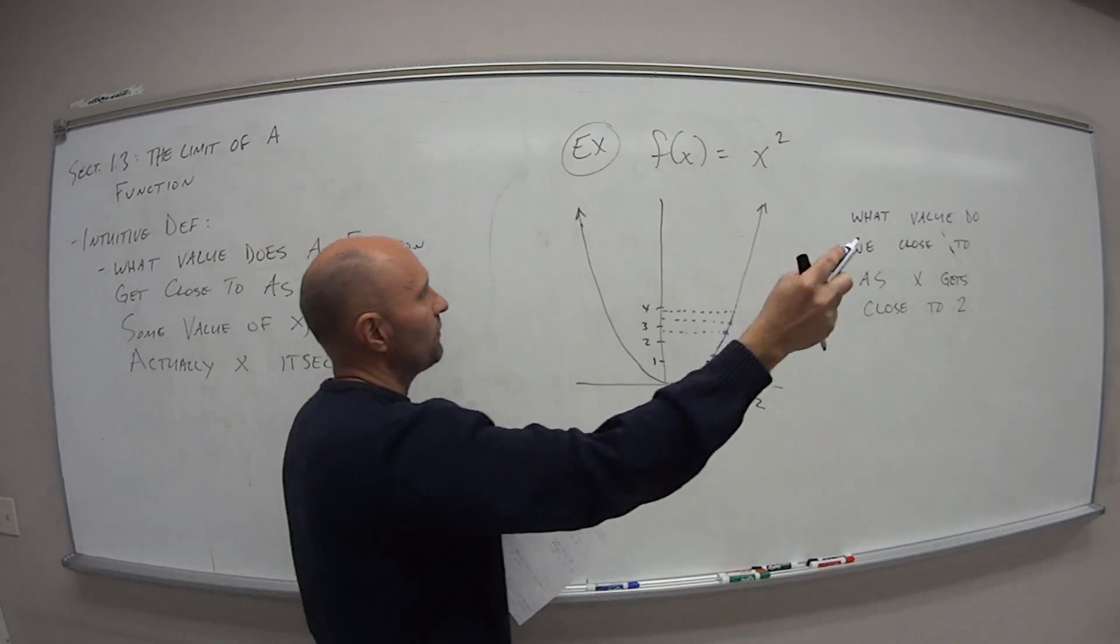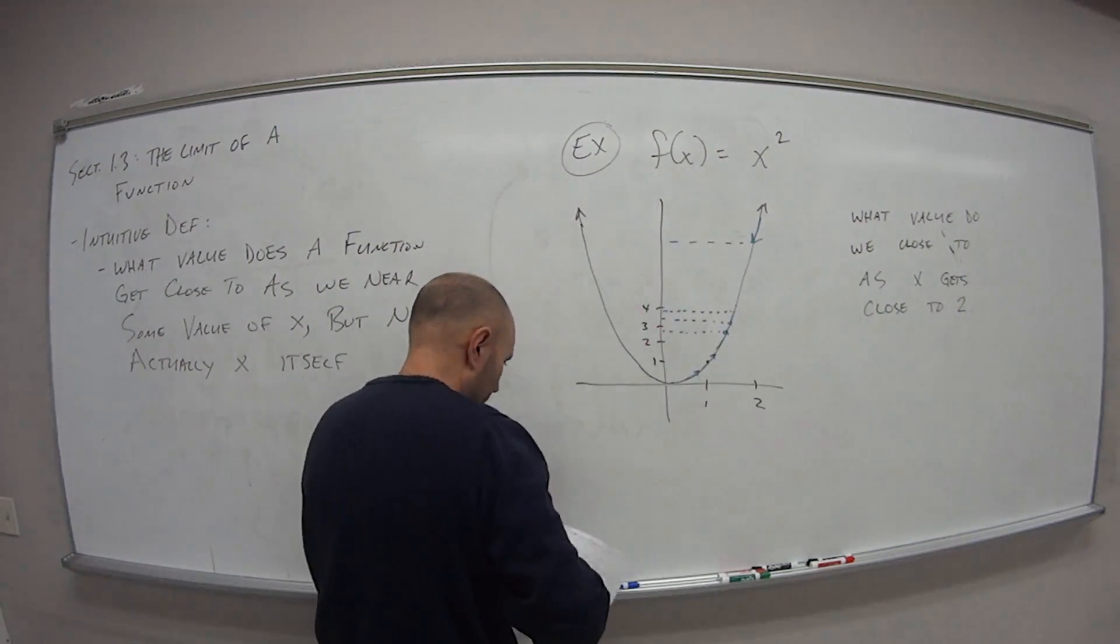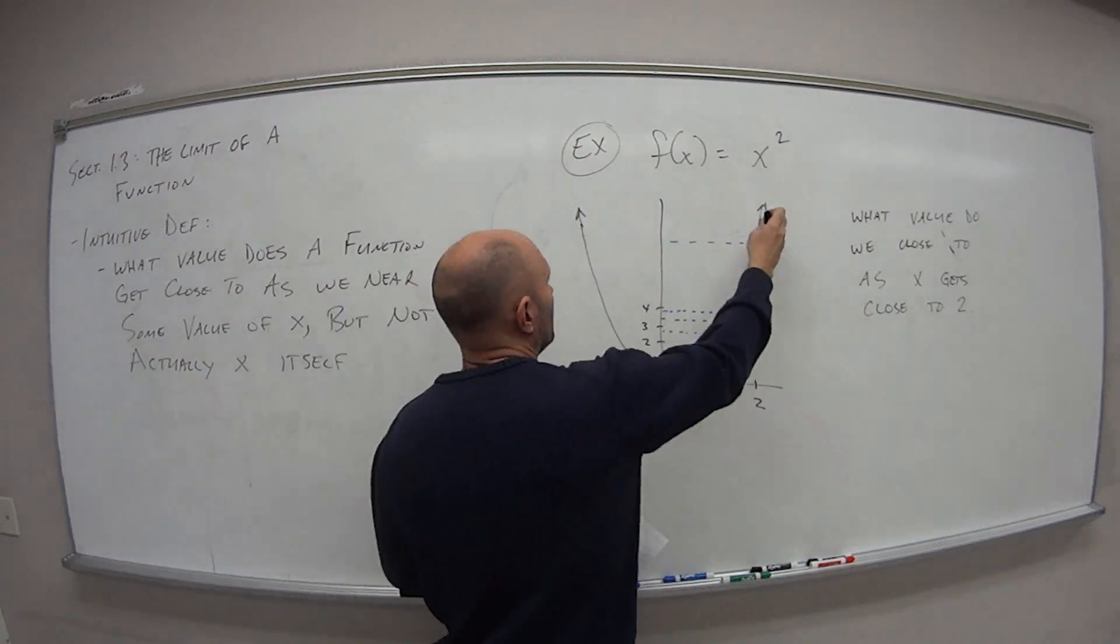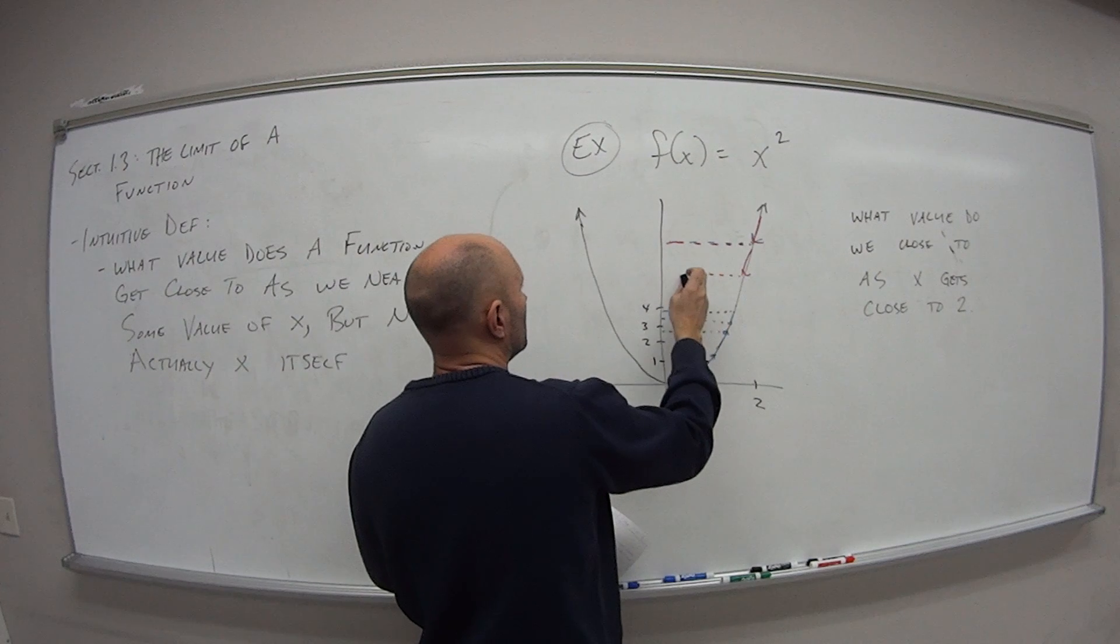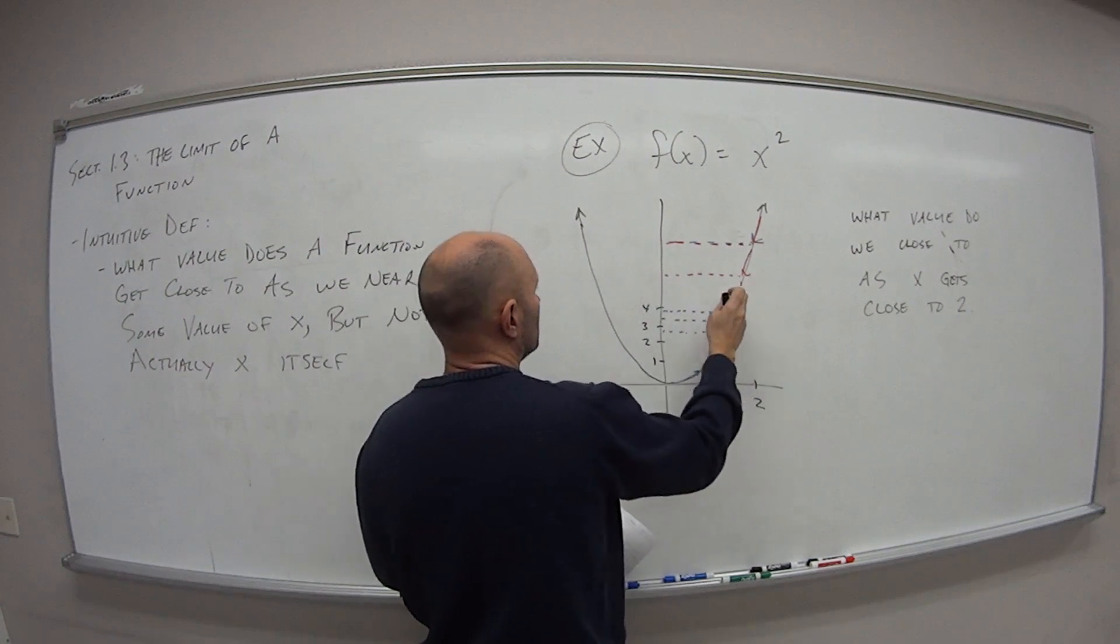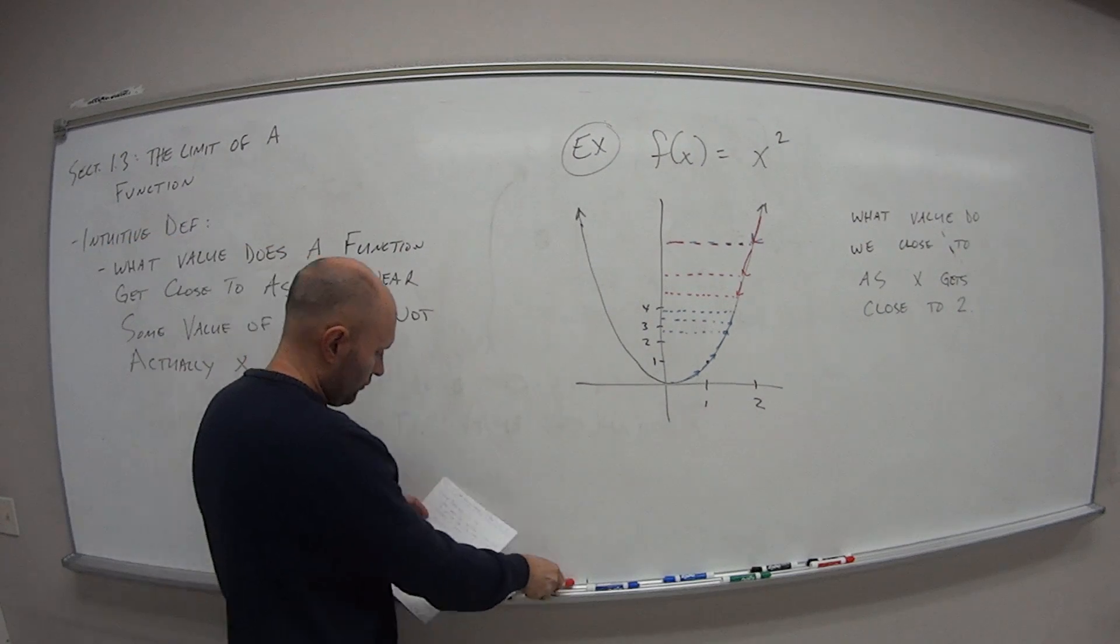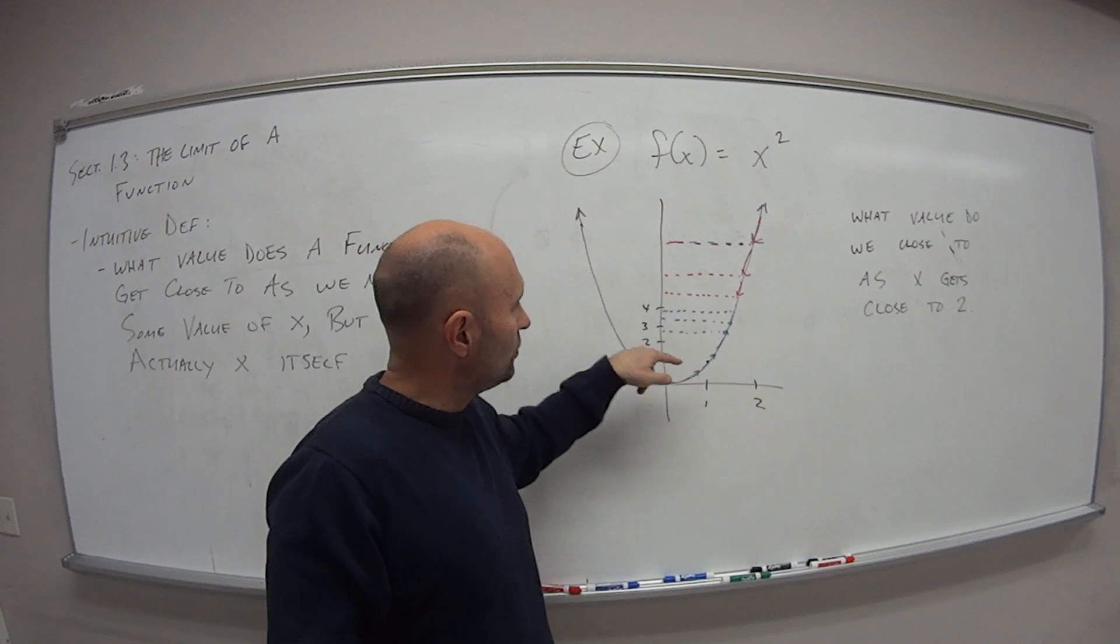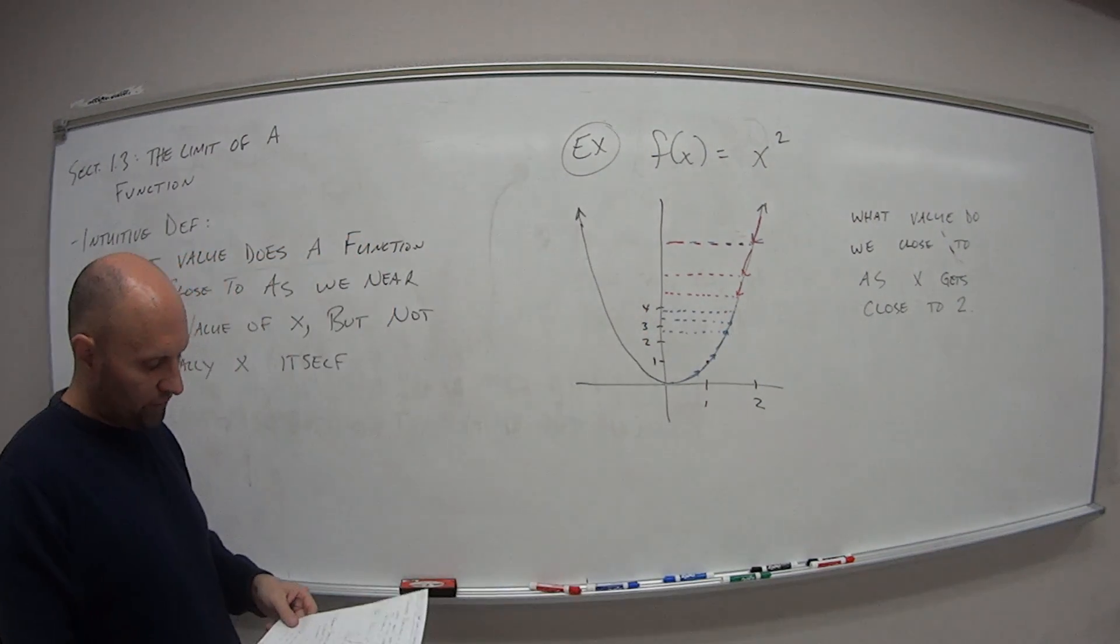Or, if I'm coming from the right side, if I'm coming down the parabola. So let me use a different color here for the distinction. So let's say I'm coming down the parabola. What value am I getting closer to? And you can see here that as we get closer to x, when x is 2, we're getting closer and closer to the number value of 4.